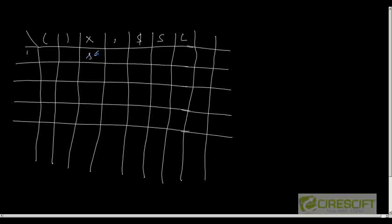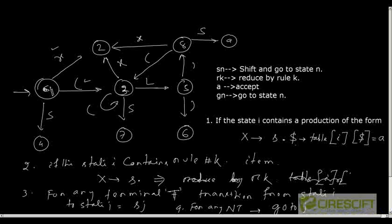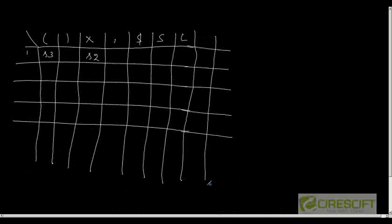But what happens if I consume the non-terminal S? In that case I have to fill goto state 4. So it will be G4, goto state 4, on consuming S. The blank entries will give syntax errors.